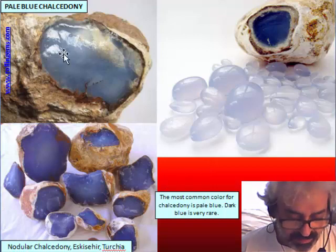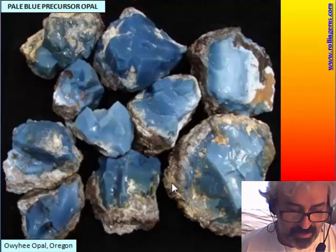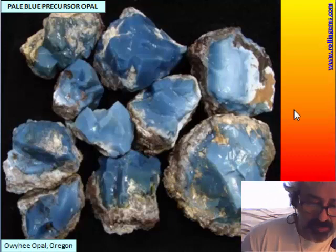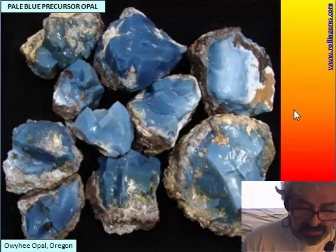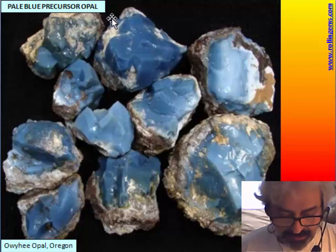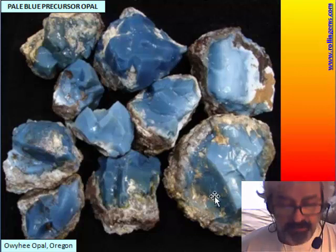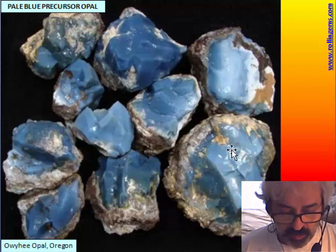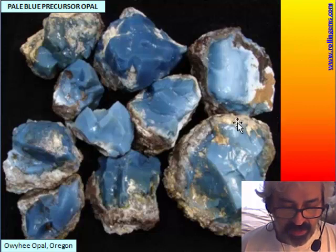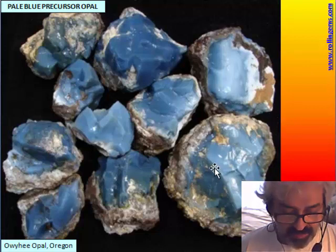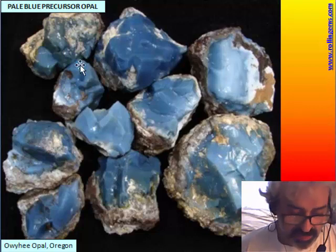This Turkish deposit is typically nodular. There is also a possible precursor in the blue opal from the Owyhee Mountains in Oregon. This opal is found filling thunder eggs, which are a kind of nodule. The area is very rich in opal deposits. The color is very similar, and the material is also used for gems — with no inclusion, no moss, nothing inside, and no bands.